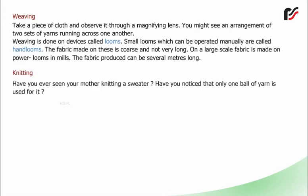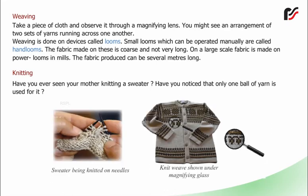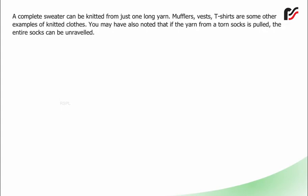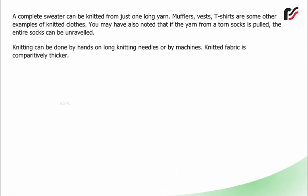Knitting: Have you ever seen your mother knitting a sweater? Have you noticed that only one ball of yarn is used for it? A complete sweater can be knitted from just one long yarn. Mufflers, vests, and t-shirts are some other examples of knitted clothes. You may have also noted that if the yarn from a torn sock is pulled, the entire sock can be unraveled. Knitting can be done by hands on long knitting needles or by machines. Knitted fabric is comparatively thicker.